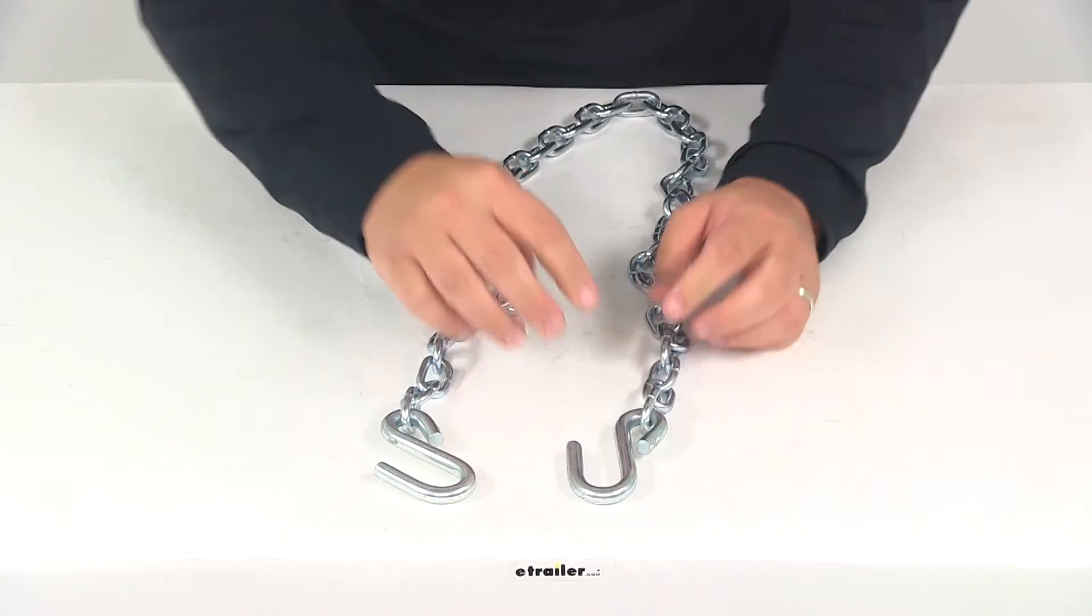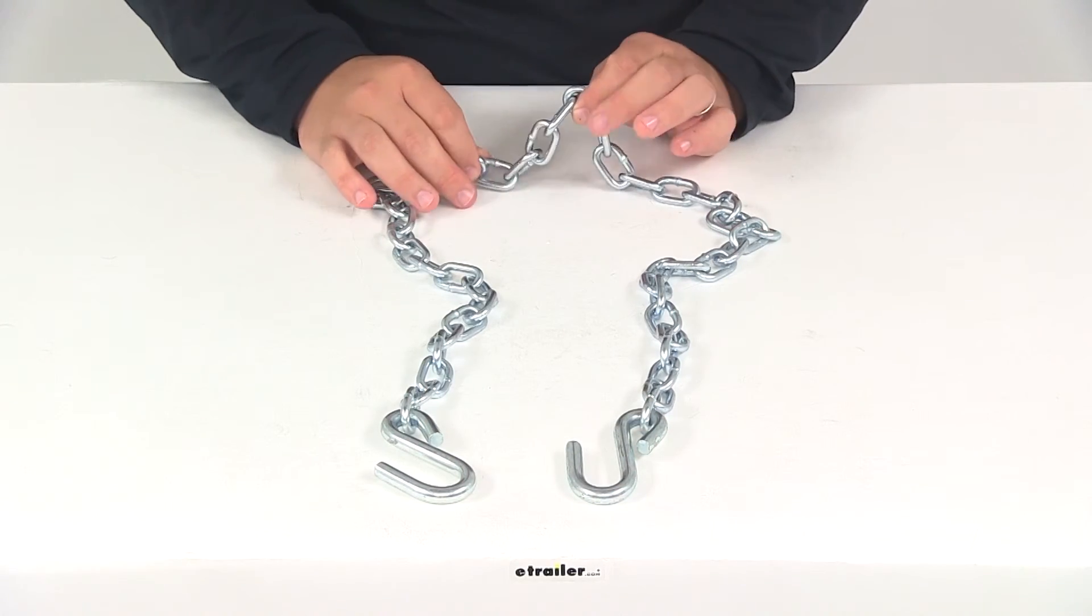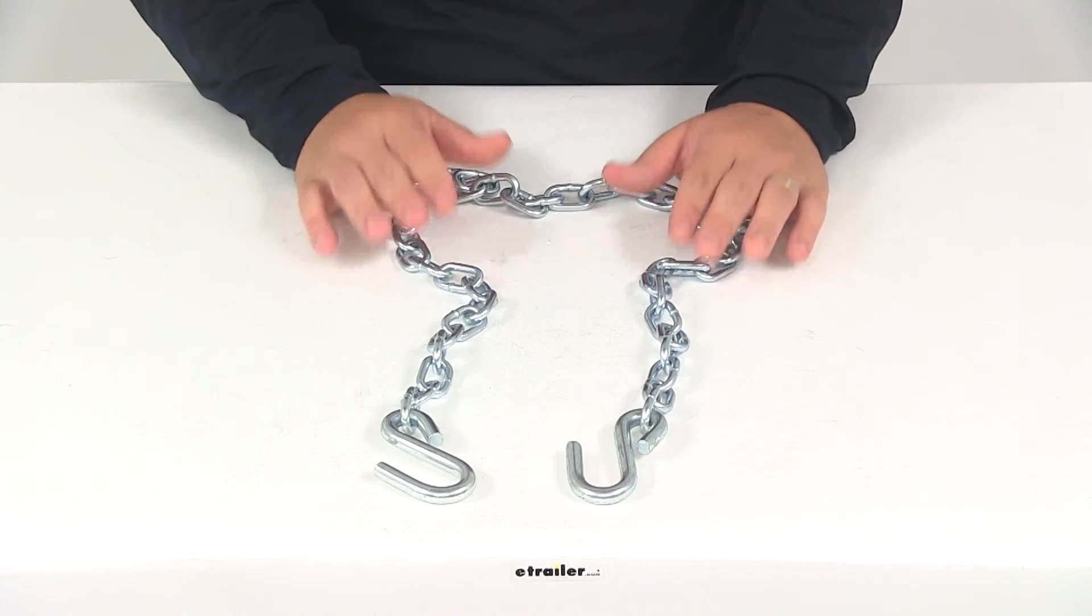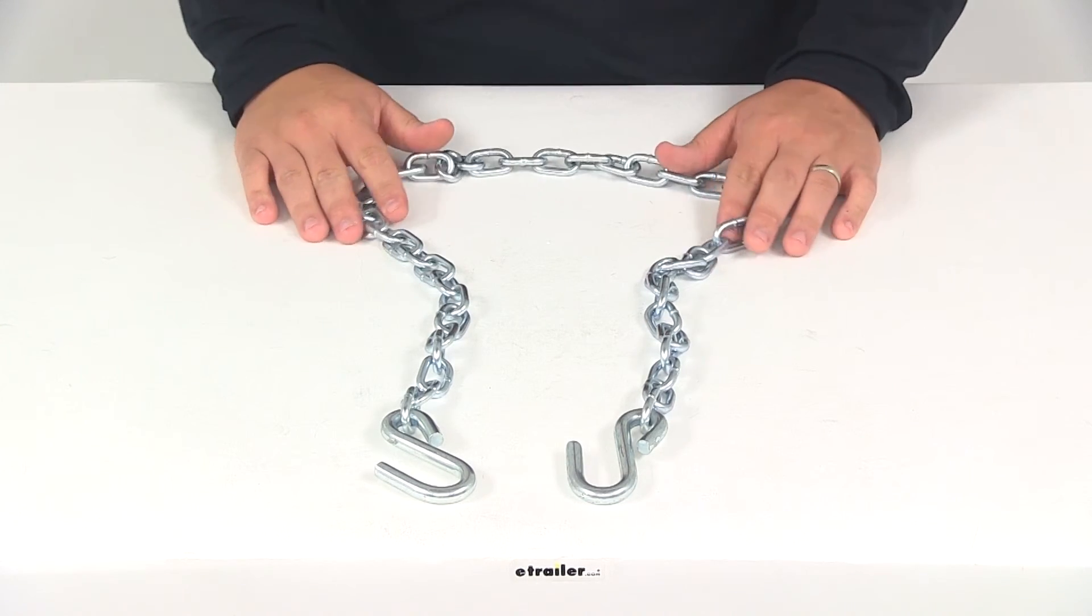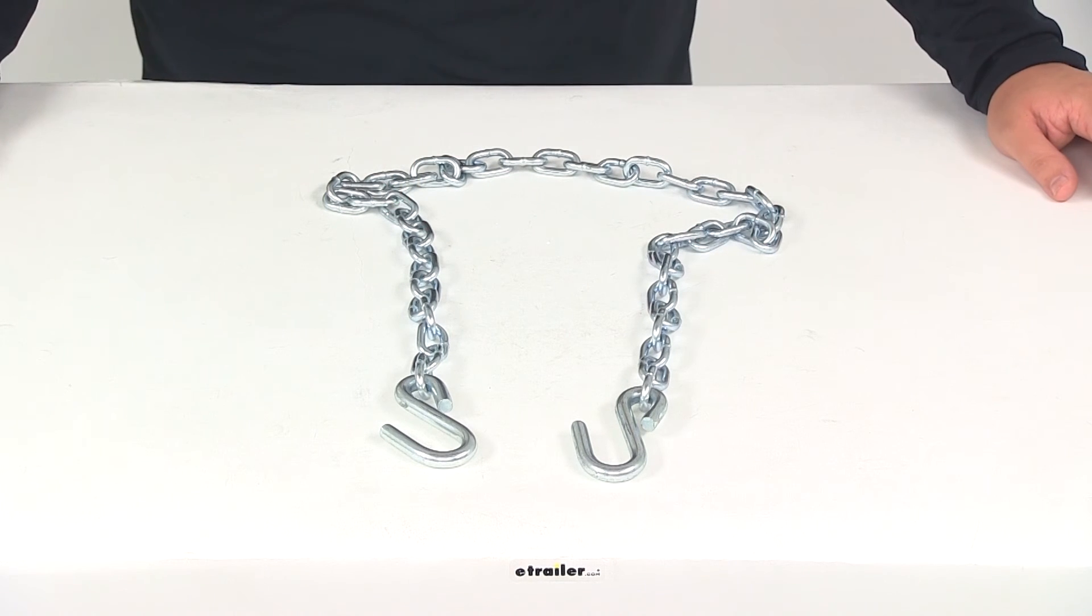Nice sturdy steel construction. These chains are going to be very strong and durable, and with this part number you're going to get one 48 inch long safety chain. That's going to do it for our review of part number 2114-553-04.